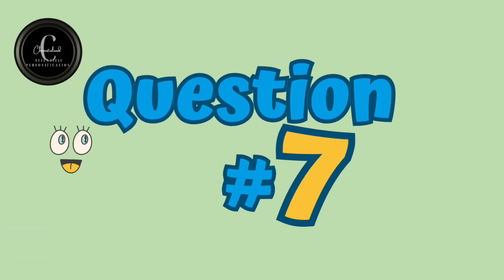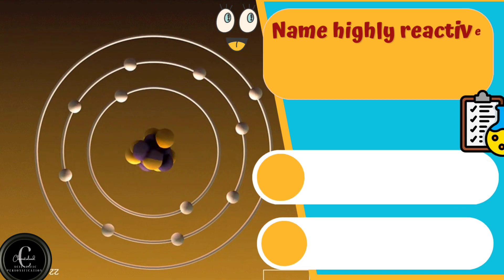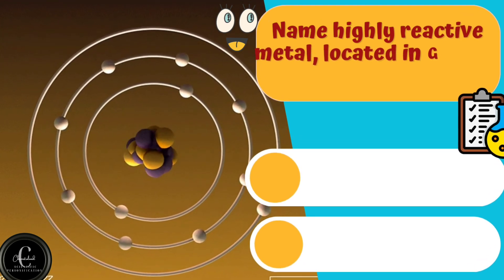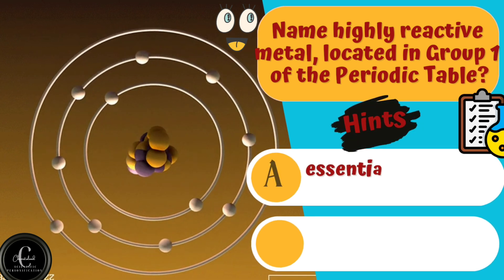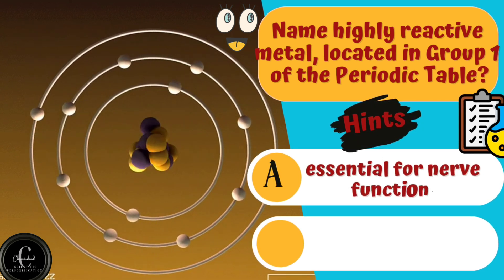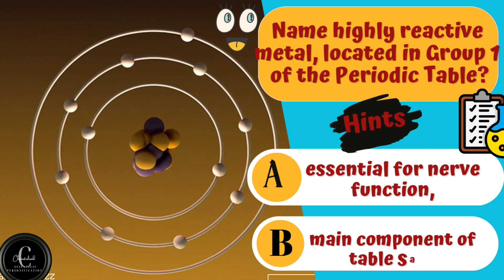Next question is about grayish white soft metal. Name highly reactive metal, located in group one of the periodic table. Hints are A. Essential for nerve function. B. Main component of table salt.